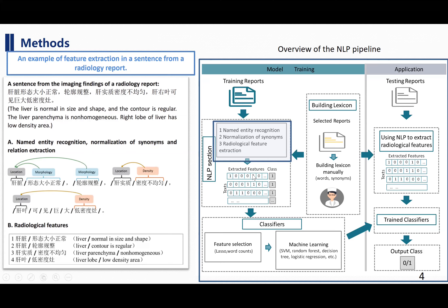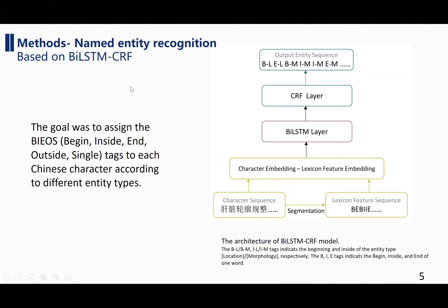This matrix is sparse. Therefore, we use LASSO for feature selection and machine learning methods for liver cancer diagnosis. We chose four popular machine learning methods. NER is the most important part of our work. We use the deep learning method LSTM-CRF. In addition to normal features, we also added lexicon features. The lexicon was built by ourselves. With this feature, we could get better performance.